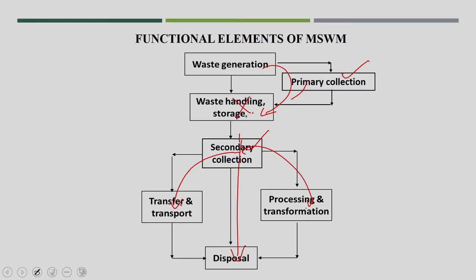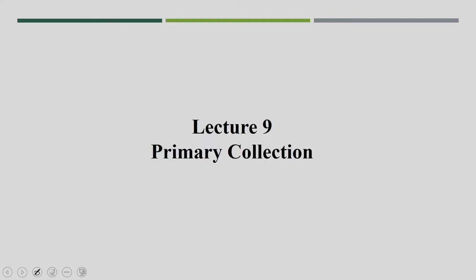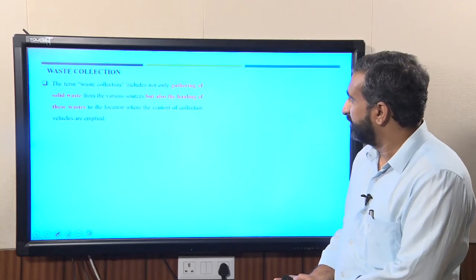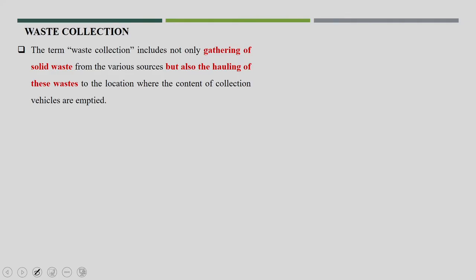That is why I thought of separating primary collection and secondary collection into two different ideas, which will be more beneficial. This lecture is on primary collection. As I said, primary collection includes not only the gathering or collection of waste from various sources but also the hauling of this waste to the location where the vehicle will be emptied or waste will be disposed off.